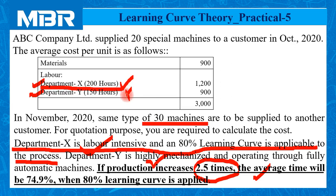Department Y is not affected by the learning curve as it is fully automatic. When machines are working, learning curve theory is not affected by production, because human skill may improve with experience, but the skill of a machine cannot be increased with experience or number of operations.